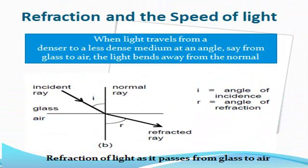The angle formed between the incident ray and the normal is called the angle of incidence. And the angle between the refracted ray and the normal is called the angle of refraction.